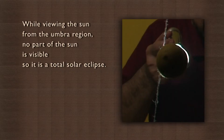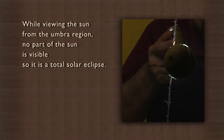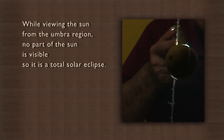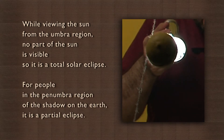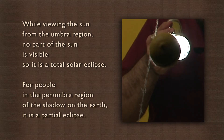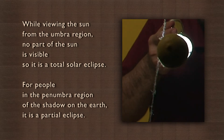The eclipse may be total or partial. While viewing the sun from the umbra region, no part of the sun is visible and so it is a total solar eclipse. For people in the penumbra region of the shadow on the earth, it is a partial eclipse.